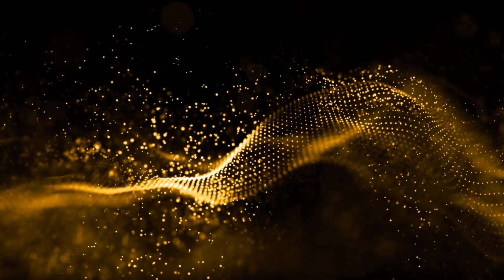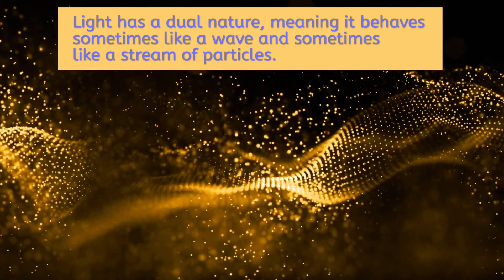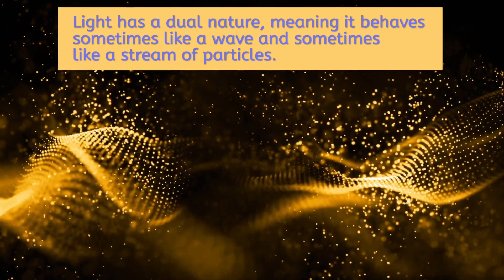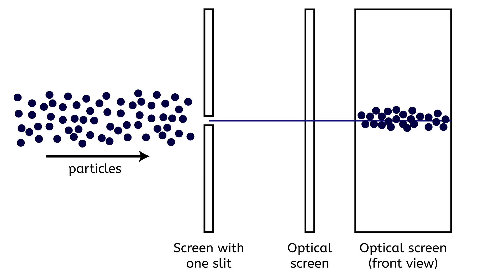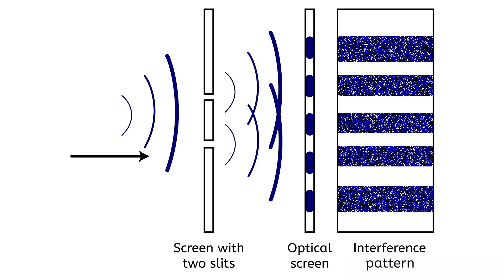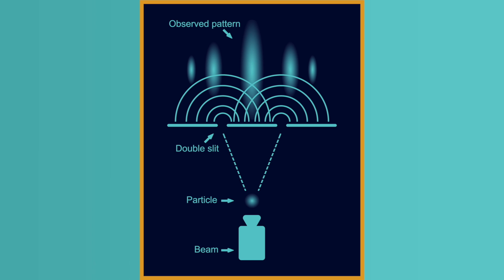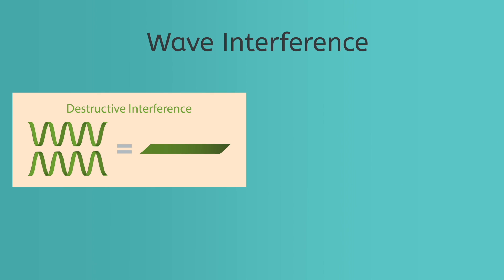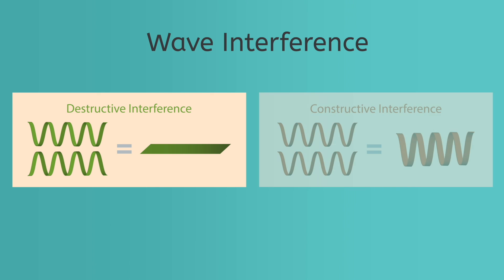Since the early 1900s, scientists have known that light has a dual nature, meaning it behaves sometimes like a wave and sometimes like a stream of particles. For example, if scientists aim a beam of light at a screen with one slit open, the light behaves as a stream of particles — a single line of brightness. But if two slits are open, the light acts as a wave and goes through both openings simultaneously, creating a characteristic pattern of light and dark fringes called an interference pattern. This pattern occurs because peaks in the light wave at one point sometimes add up with the valleys in the wave at other points, creating regions of dark known as destructive interference, while places where two peaks intersect create extra bright spots known as constructive interference.